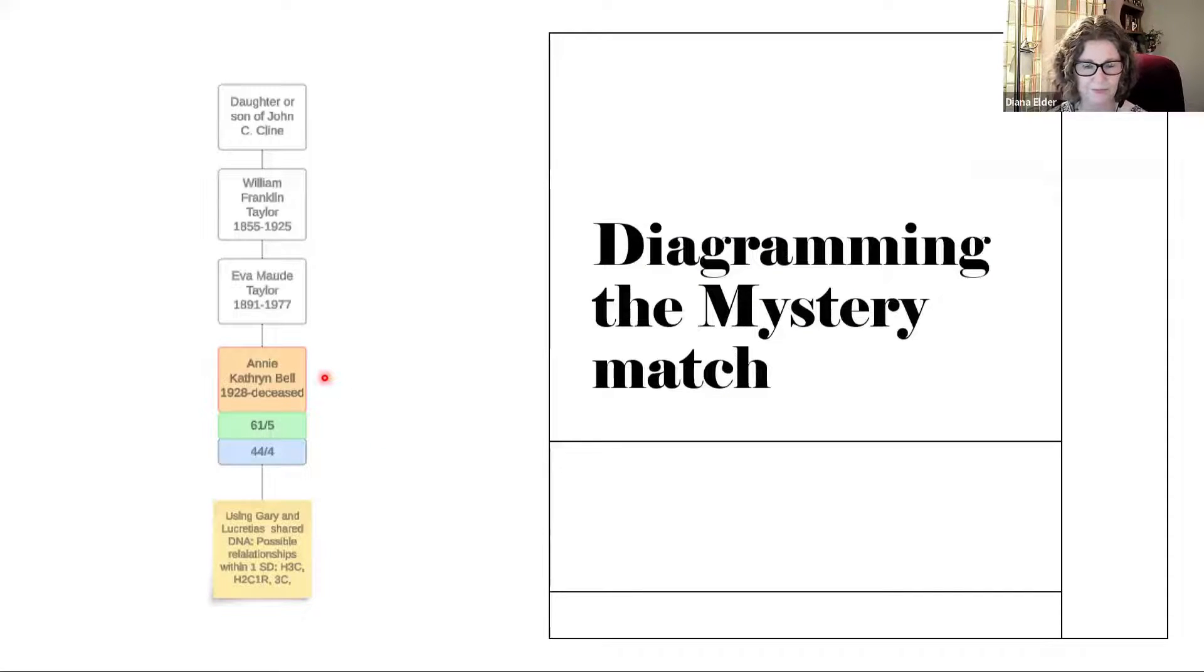So here's Annie. She was born in 1928. She is deceased. And here are my two cousins, Gary and Lucretia, who've both given me permission to use their names. And we can see that we have possible relationships that we have got maybe a half third cousin, a half second cousin once removed, or a third cousin. And so I am in the process of trying to do a little bit more work here and see if possible there was some type of something that happened here. I don't know how this person connects to John C. Klein. All I know is that this Annie is a mystery match, and somehow I want to connect her in my diagram and to John C. Klein and try to figure out how she might connect. I would also say that she is in a Klein cluster. So that's how I know she is very likely related somehow here through John.